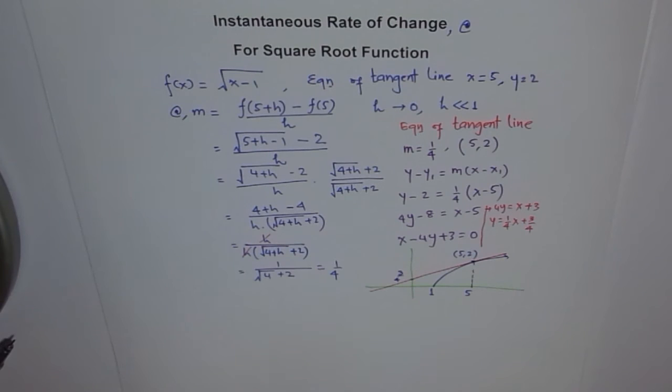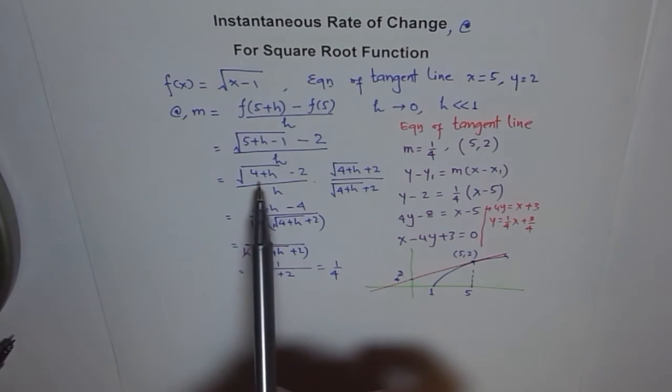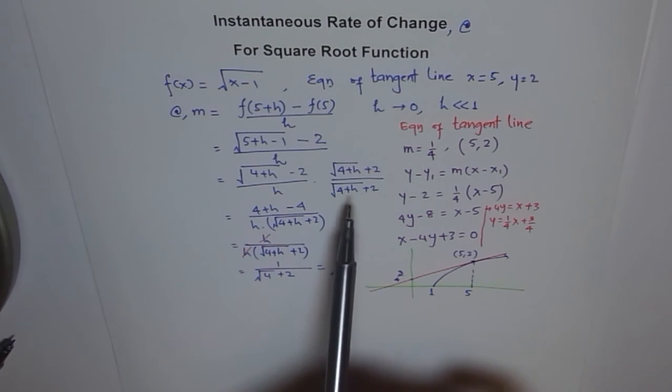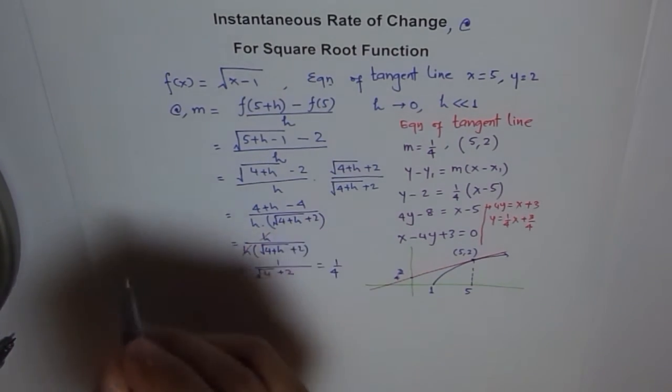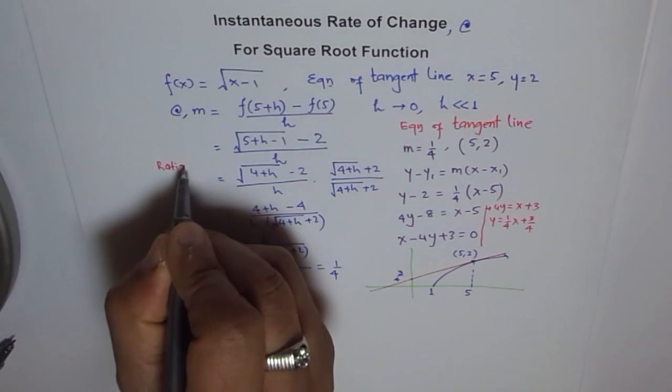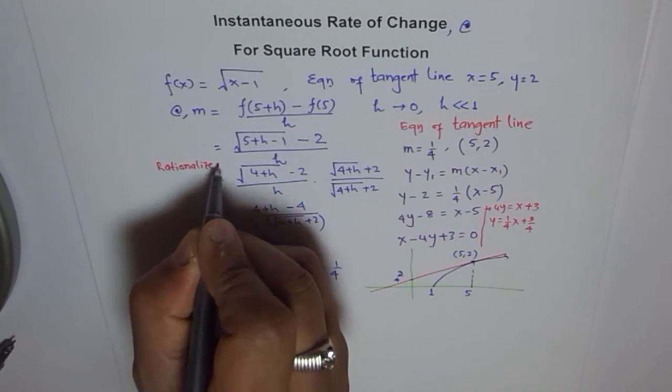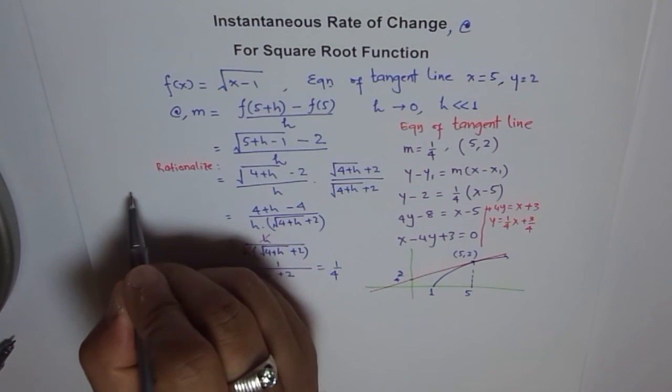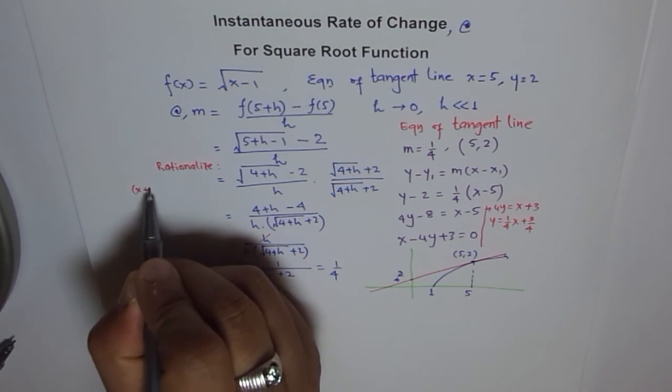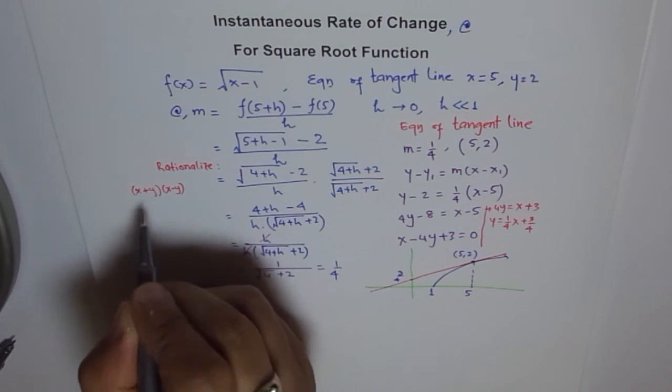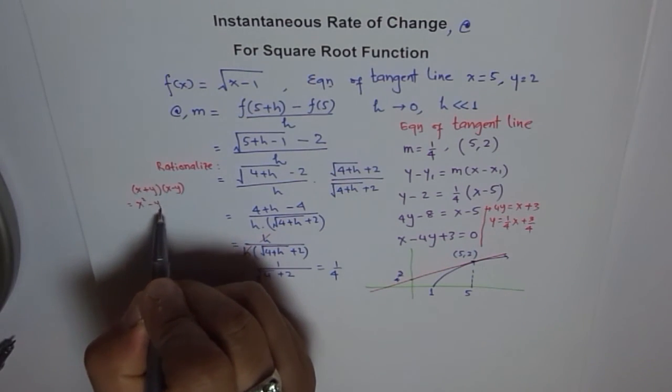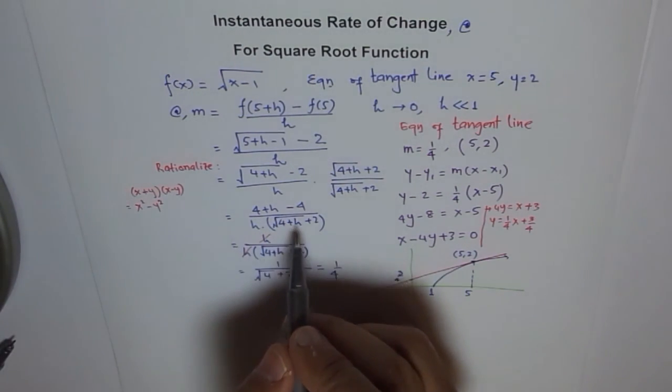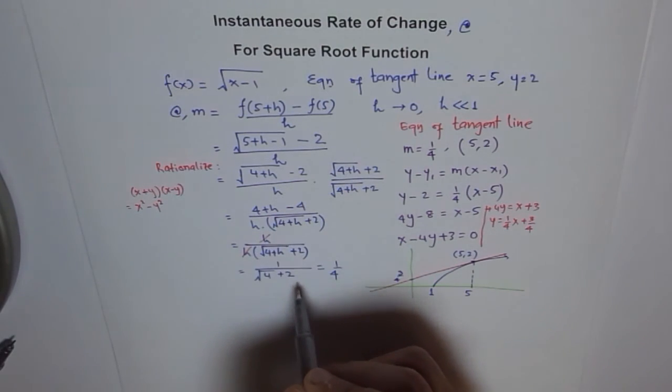The important thing here is that whenever you're trying to find instantaneous rate of change for a square root function, then you have a square root, and to eliminate this and to simplify it, we need to rationalize. So that is a critical step. So let me write this here, rationalize. So this is a very critical step. And then once you do rationalization, you remember here we use this property that x+y times x-y, product of sum and difference gives you difference of squares. So we use this property when we expand it, and then it was possible for us to simplify it further and get our answer. So these are critical things which you remember.